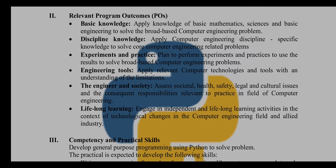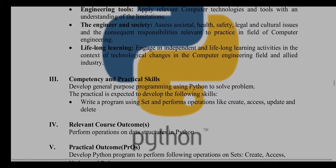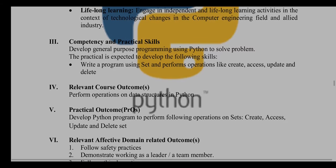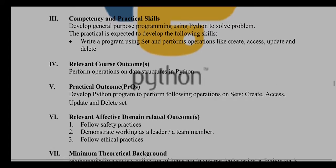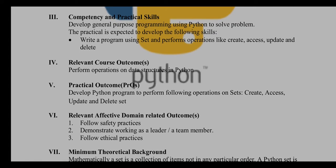Next is competency and practical skills, then relevant course outcomes and practical outcome. In these sections, the main aim or skill to be built is that you are able to understand the operations related to the set and you can perform those operations on that particular set.